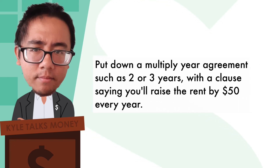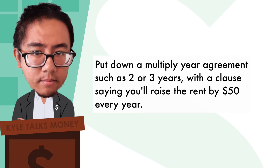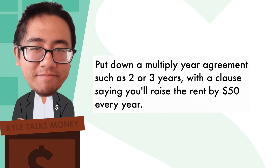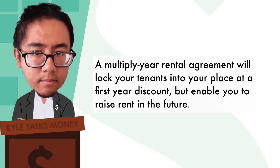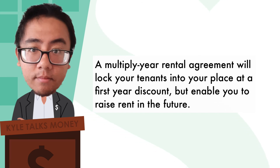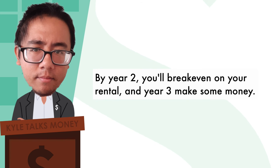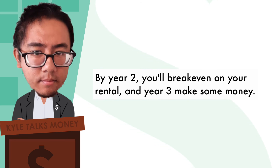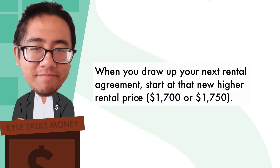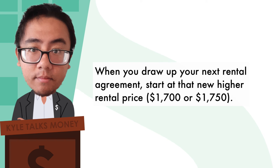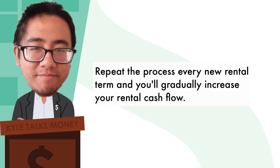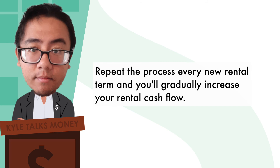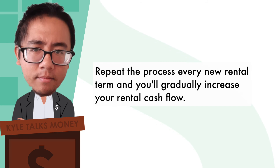Put down a multiple-year agreement, such as two or three years, with a clause saying you'll raise the rent by fifty dollars every year. A multi-year rental agreement will lock your tenant in at a first-year discount but enable you to raise rent in the future. By year two you'll break even on your rental, and by year three you'll make some money. When you drop your next rental agreement, you'll start at that new higher rental price — $1,700 or $1,750 — and repeat the process every new rental term, gradually increasing your rental cash flow.